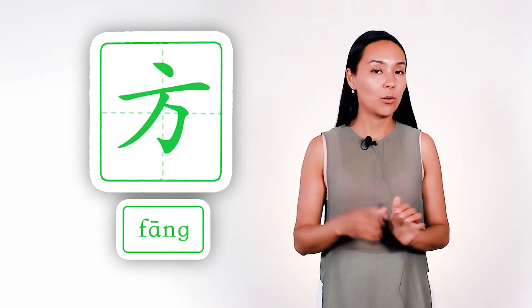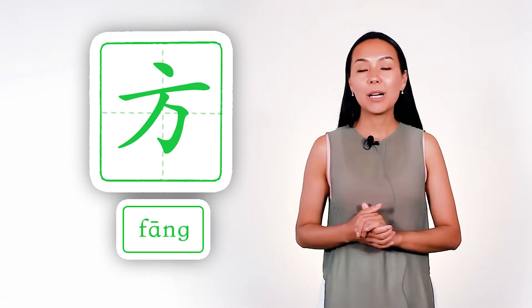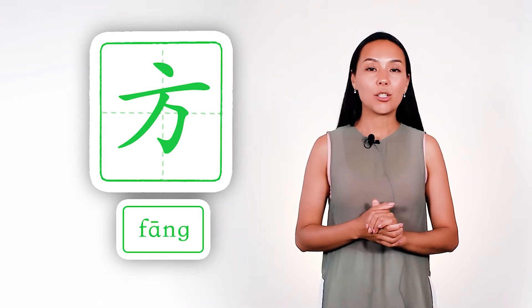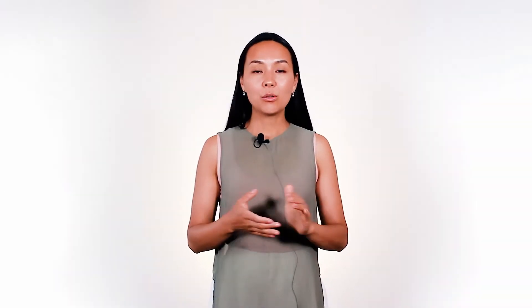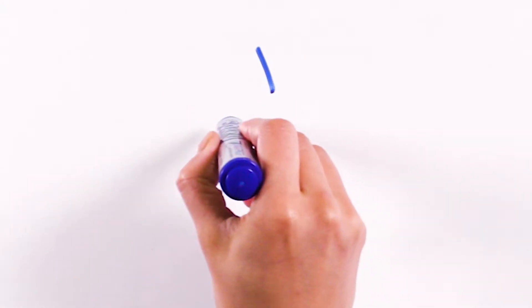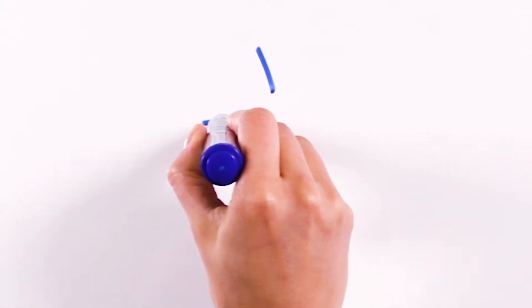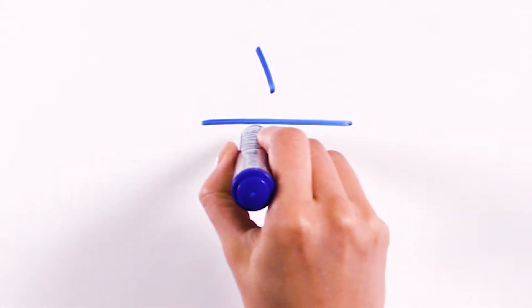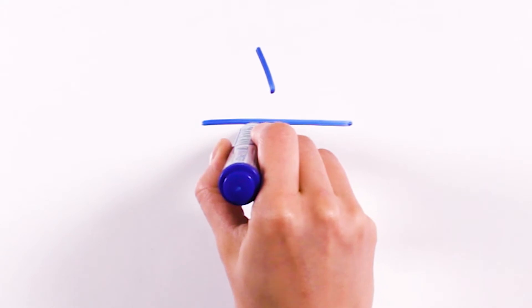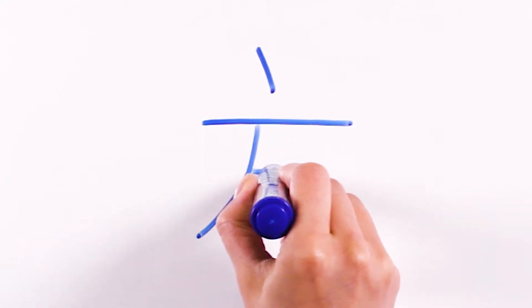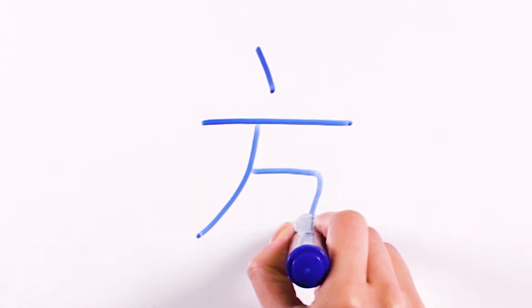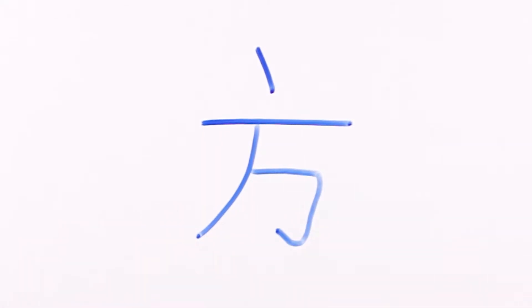This radical has only one form, and it is used as a separate word. Now, let's see how we draw it: one, two, three, four.